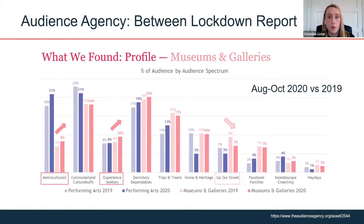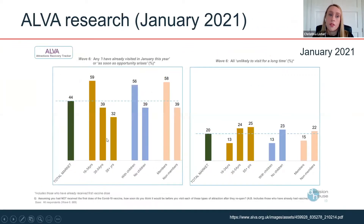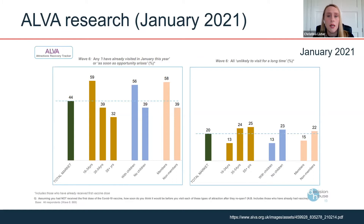It's interesting that metroculturals and experience seekers — who love and breathe culture and heritage — were really keen to come back last summer. ALVA, the Association of Leading Visitor Attractions, has been tracking public sentiment and attitudes to returning to venues since April last year. Their sixth wave of research was from January, and they've announced that their next wave is out soon — look out for the findings because things are changing very quickly.